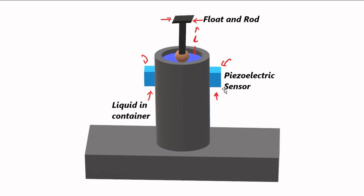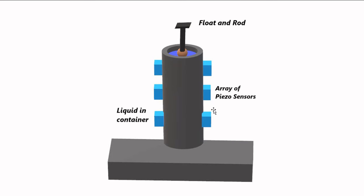This is a single sensor arrangement where detection occurs at only one point. In most cases, this is used when we don't want the liquid level to cross below a certain danger mark or limiting level — when it goes above or below that level, an alarm is generated.